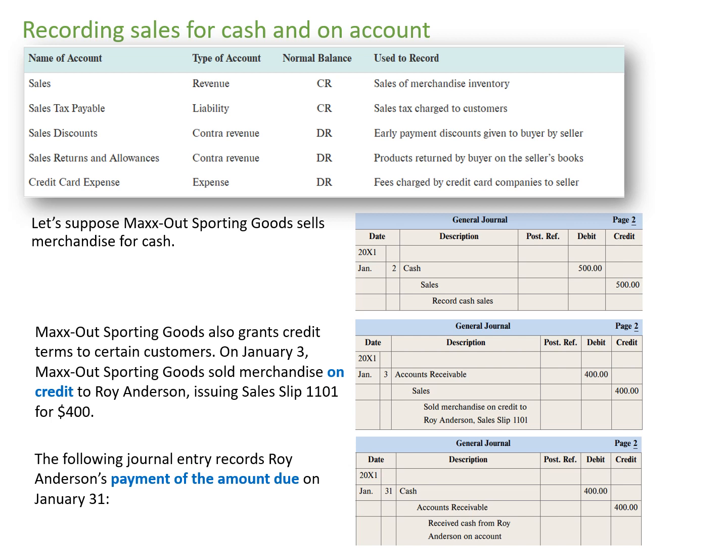The sales account is the primary revenue account for a merchandising company. Let's practice this. Max Out Sporting Goods sells merchandise for cash. We record the sale of $500 for cash by first writing the date in the date columns and then cash into the description column and $500 into the debit column. We debit cash because the business cash increased and cash increases with the debit. On the next line we slightly indent and write sales into the description column and $500 into the credit column. We credit the sales account because sales increased and sales is an account that increases with credits.